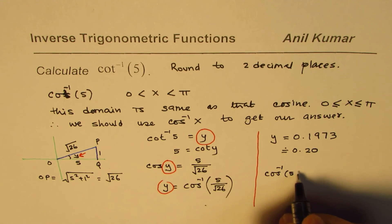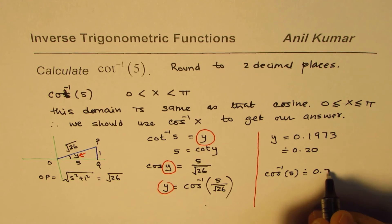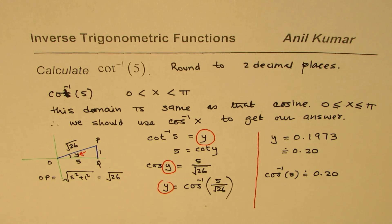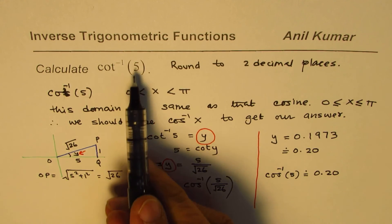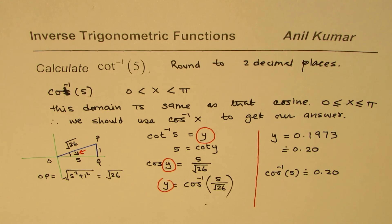We can write cot⁻¹(5) is approximately equal to 0.20 in two decimal places. I hope the steps are clear. We'll take up another example where this value will be negative. I'm Anil Kumar, you can always share and subscribe to my videos. Thank you and all the best.